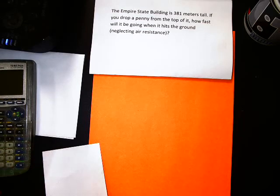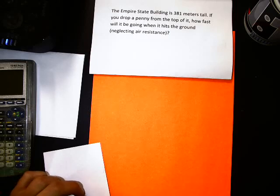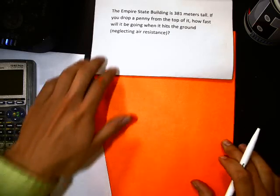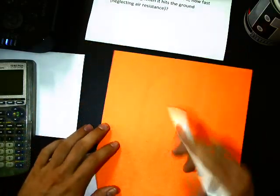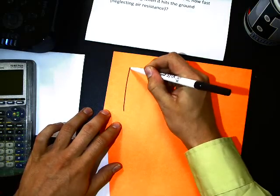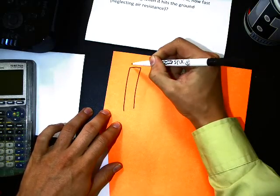So the first example that we are going to do, this was one of your homework problems, and it says that the Empire State Building is 381 meters tall. If you drop a penny from the top of it, how fast will it be going when it hits the ground? And we are going to neglect the air that will slow down the penny, so assuming there's no air resistance, how fast will it be going?